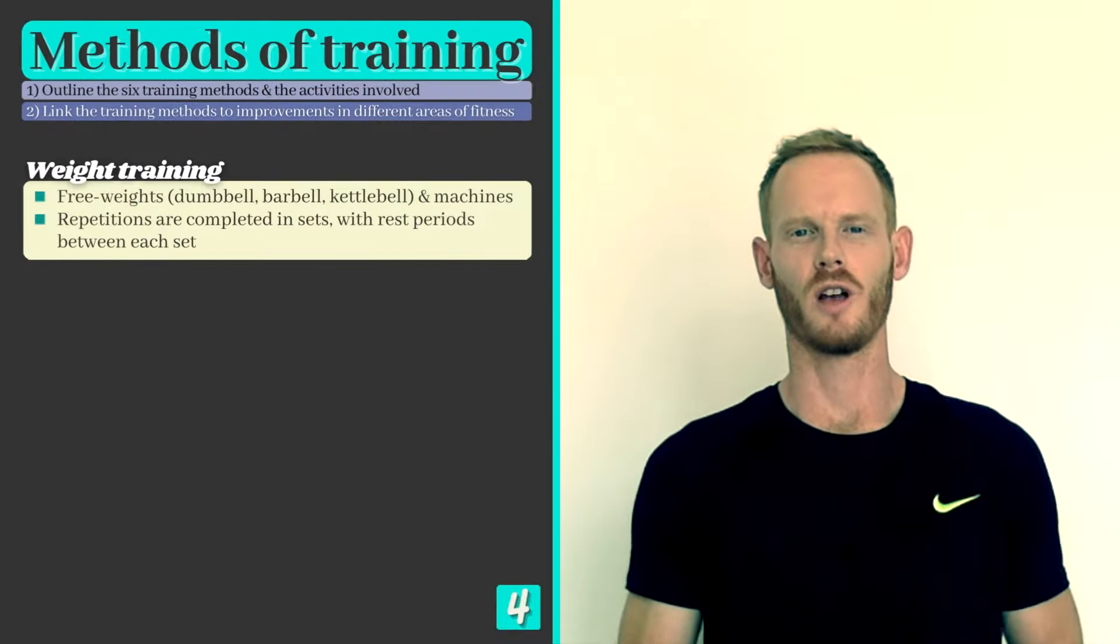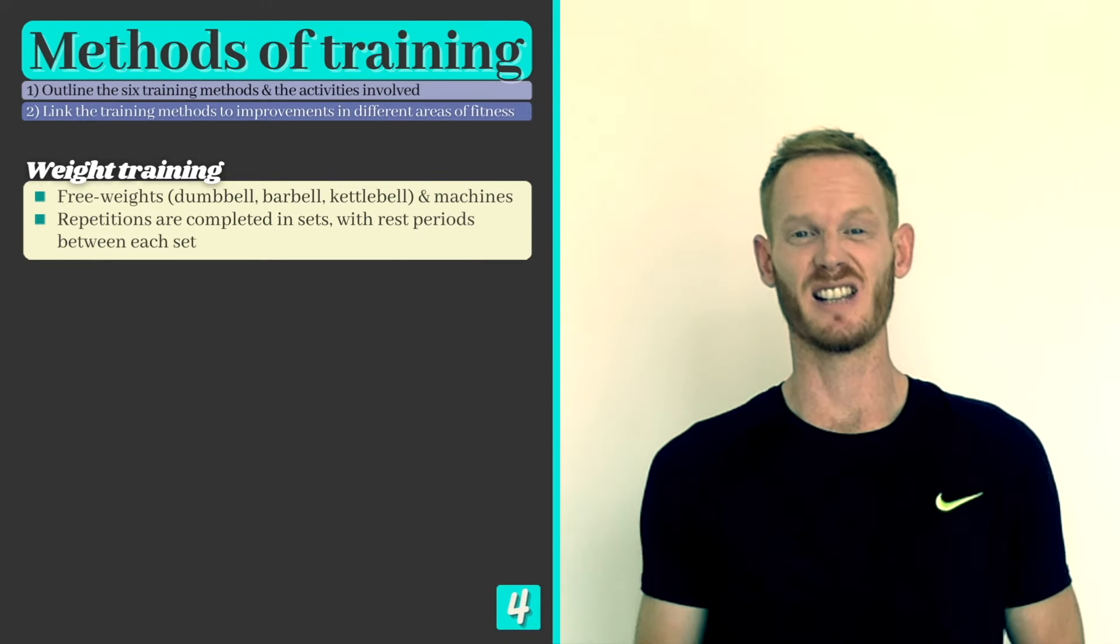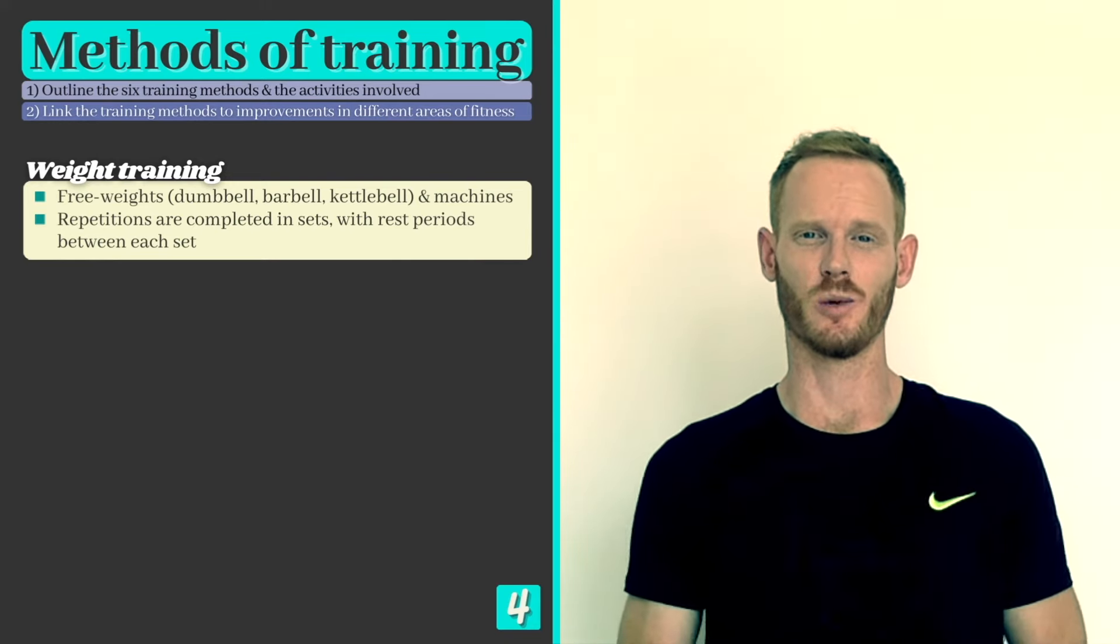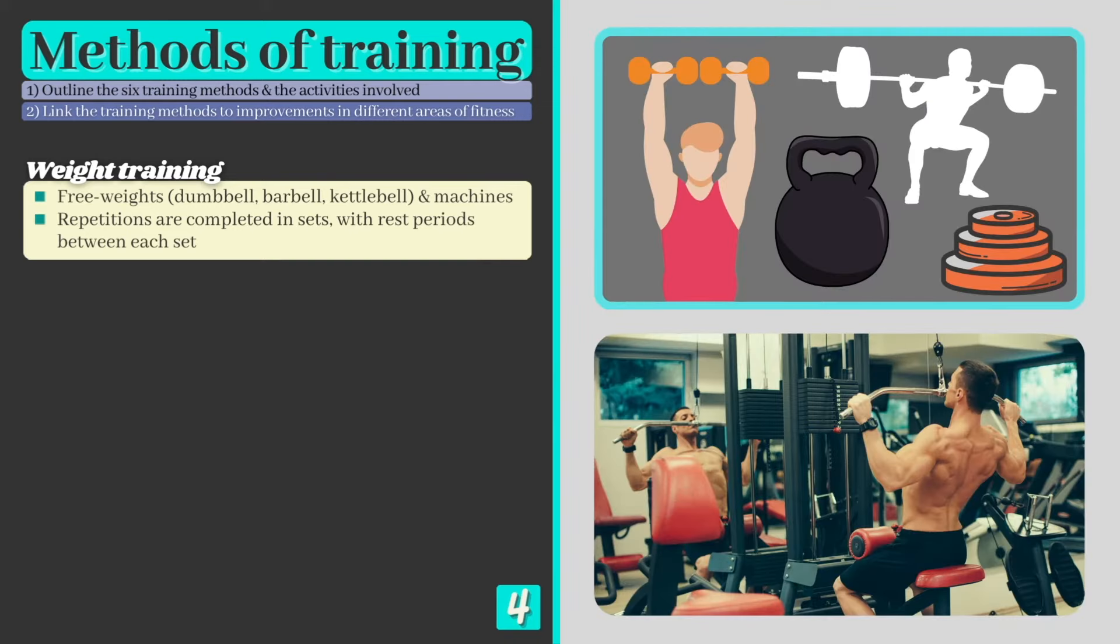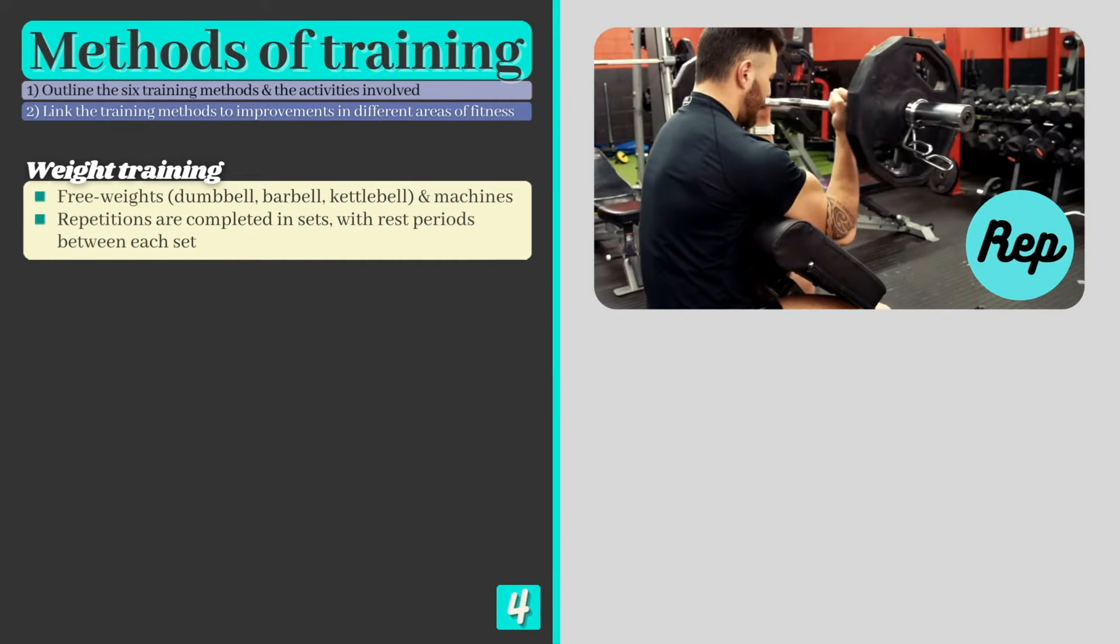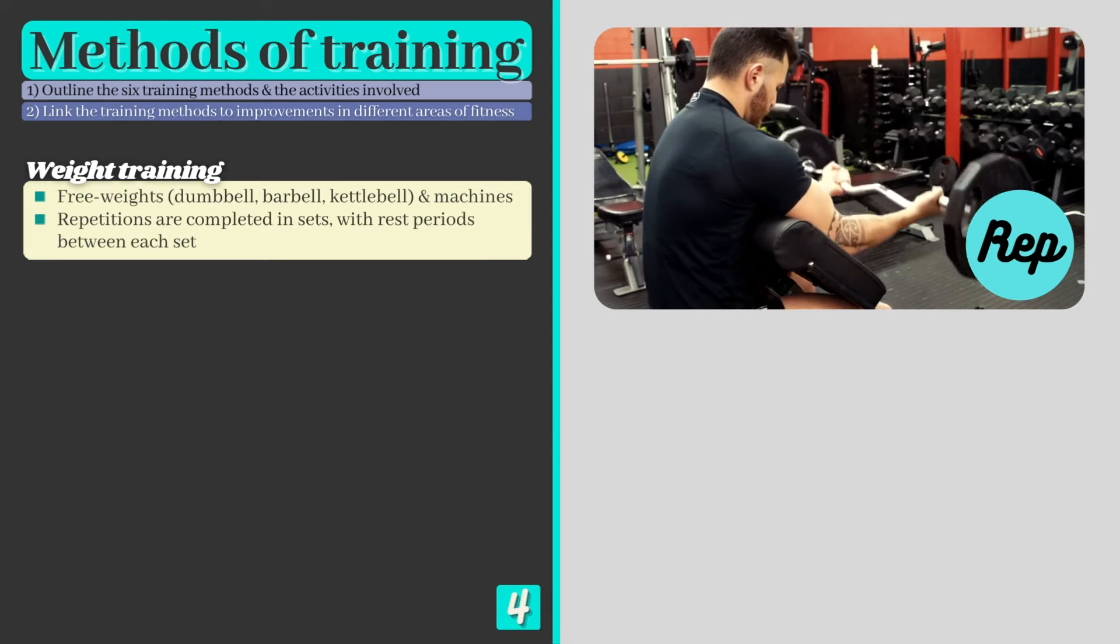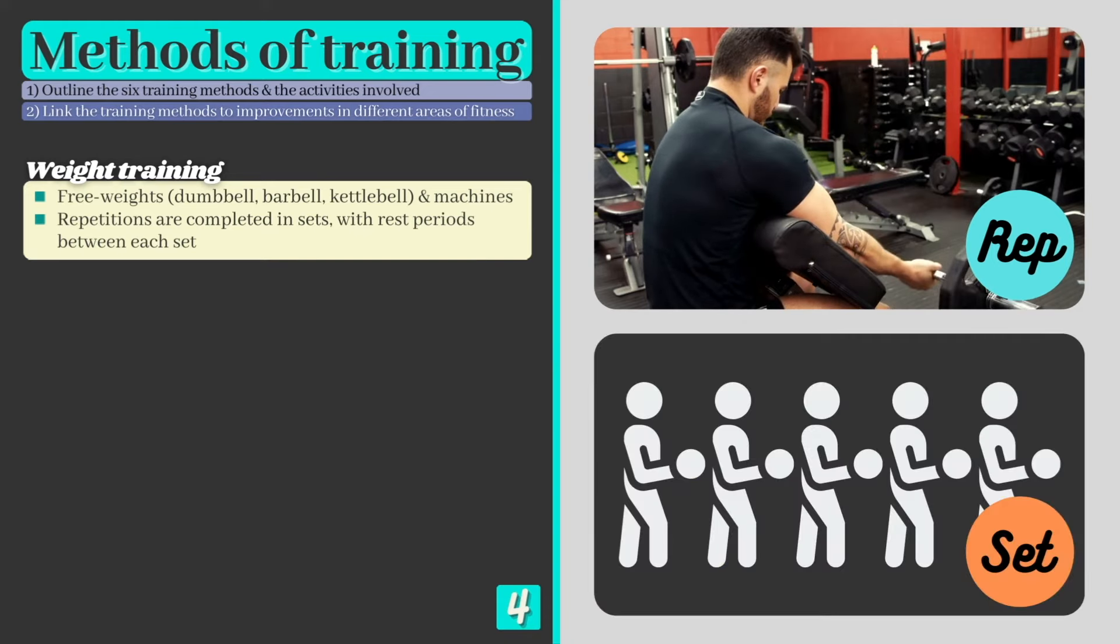Training method 4: weight training. Weight training exercises use external weights as a resistance to work against, and weights come in two categories: free weights, which include dumbbells, barbells, and kettlebells, and machines. A rep is a single lift, for example one bicep curl, while a set consists of a number of reps completed in one go without rest. For a given exercise, someone using weight training will typically perform several sets with rest periods between each.